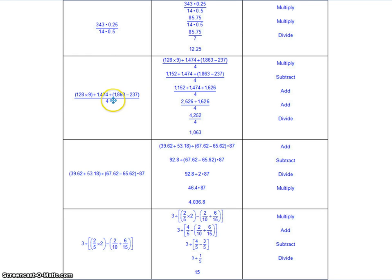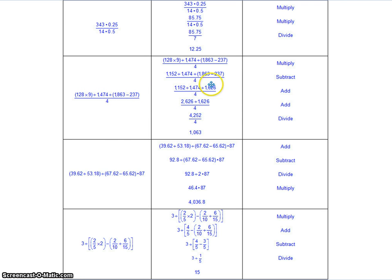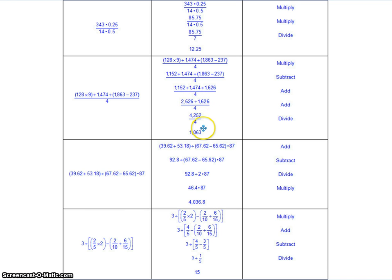Here's another one with a fraction bar. There's only one single number in the denominator, so I don't have to do anything with that. But in the numerator, I've got some parentheses — they're not inside each other, so I'll do them from left to right, then some addition, and once I get down to a single number, I can divide it by 4. So we multiply 128 times 9 to get 1,152. Then 1,863 minus 237 gives us 1,626. Adding from left to right: first 2,626, then 4,252. Finally, divide by 4 to get 1,063.